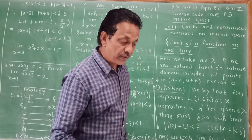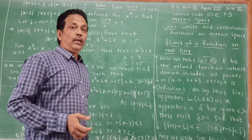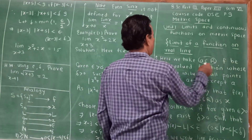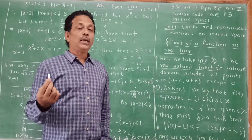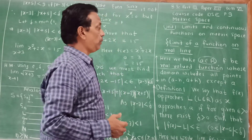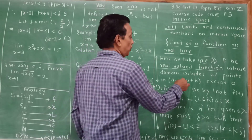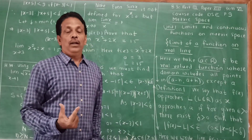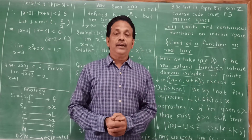Here, for the real line, we consider small a belonging to R — that is, a is a number which belongs to the set of real numbers. Here we will have a real value function. A real value function is one where the codomain is the set of real numbers. The domain includes all points in some open interval (a minus h, a plus h), except a itself.